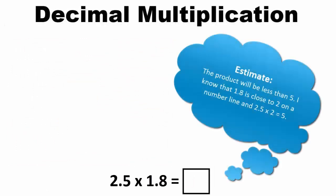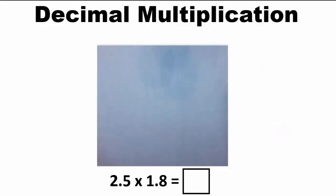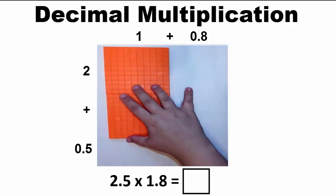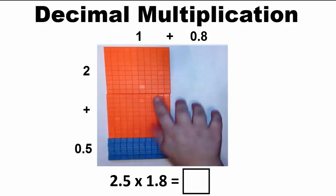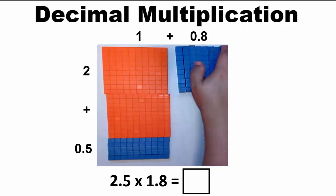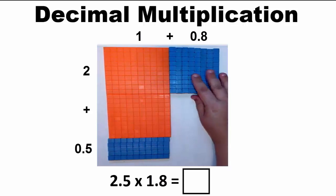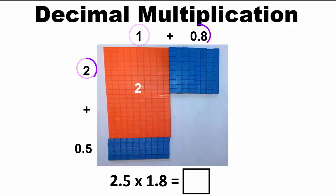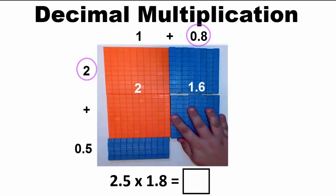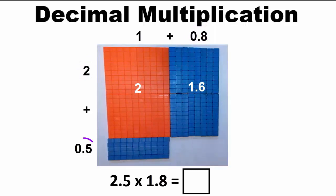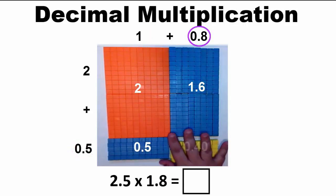Let's look at a different example: 2 and 5 tenths times 1 and 8 tenths. We can model this problem using an area model. To help us build an area model, let's first rewrite the problem using the distributive property: 2 plus 5 tenths times 1 plus 8 tenths. We can model this with base 10 blocks. Now we need to multiply each of the digits: 2 times 1 is 2; 2 times 8 tenths is 16 tenths or 1 and 6 tenths; 5 tenths times 1 equals 5 tenths; and 5 tenths times 8 tenths equals 40 hundredths or 4 tenths.